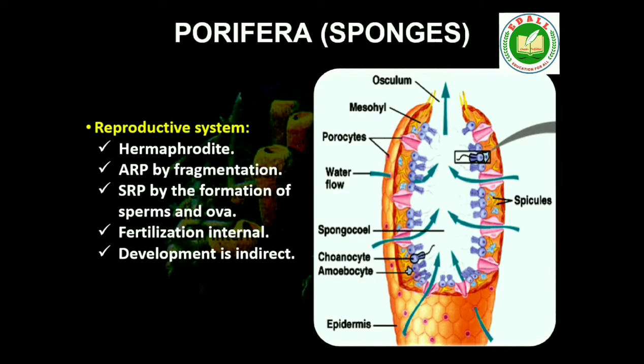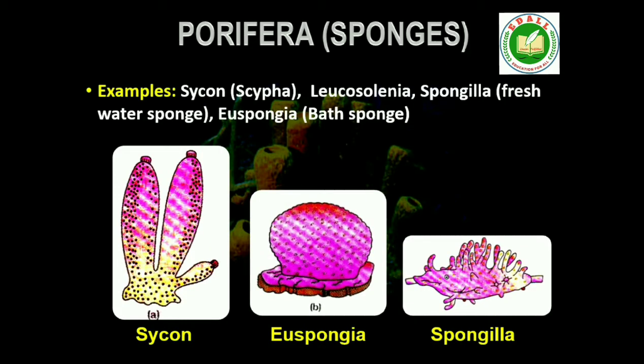Sexes are not separate — hermaphrodite, that is, eggs and sperms are produced by the same individual. Sponges reproduce asexually by fragmentation and sexually by formation of gametes. Fertilization is internal and development is indirect having a larval stage which is morphologically distinct from the adult. Examples are Sycon (also called Scypha), Spongilla (also called freshwater sponge) and Euspongia (also called bath sponge).